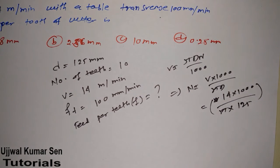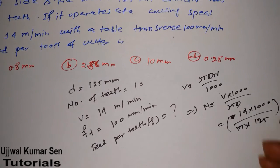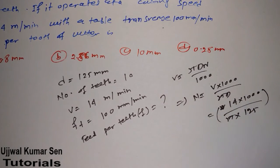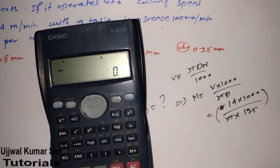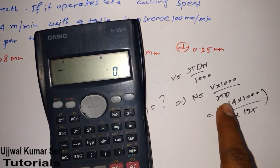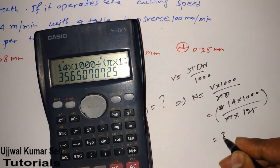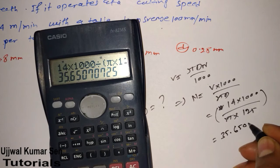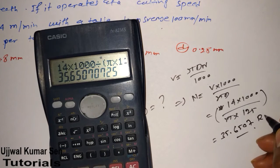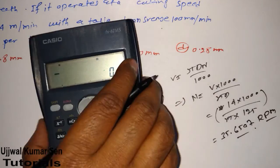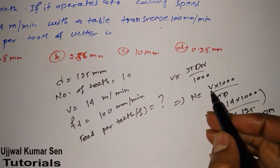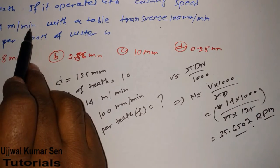So what we got: 14 times 1000 divided by pi times 125 equals 35.6507 RPM.